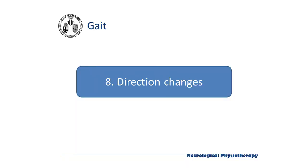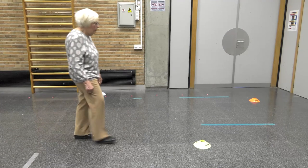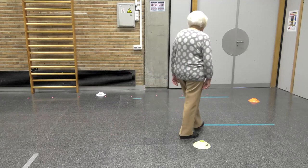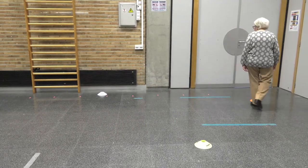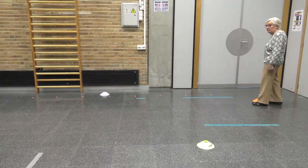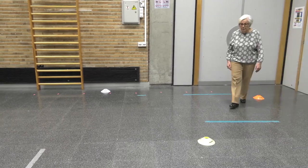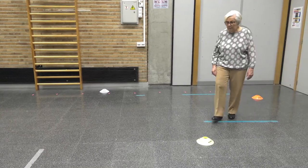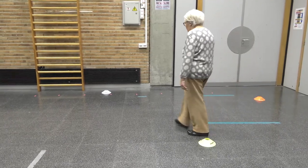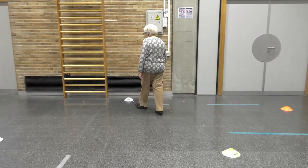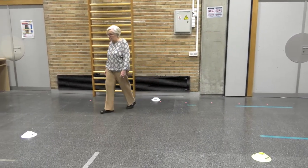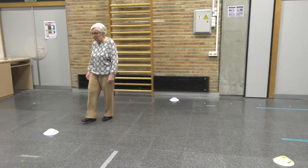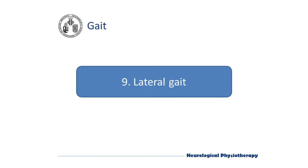Direction changes. Practicing direction changes in rehabilitation will make the patient block less when they have to do them in daily life, avoiding loss of balance and falls. It is not necessary to change direction quickly, but to do it safely in two or three steps. We can also add lateral gait as a dynamic exercise.